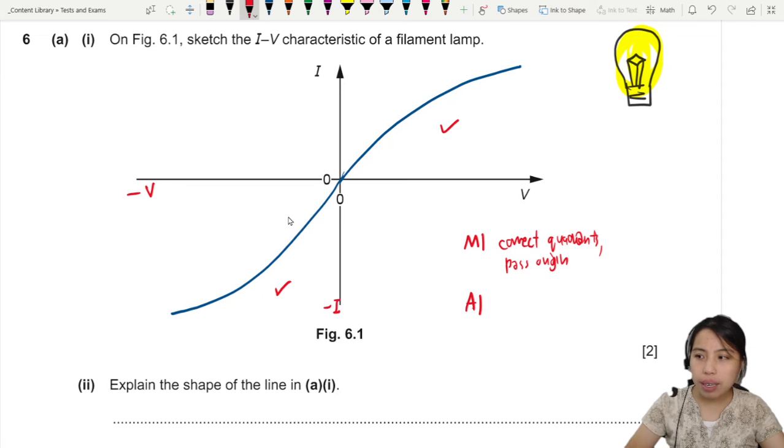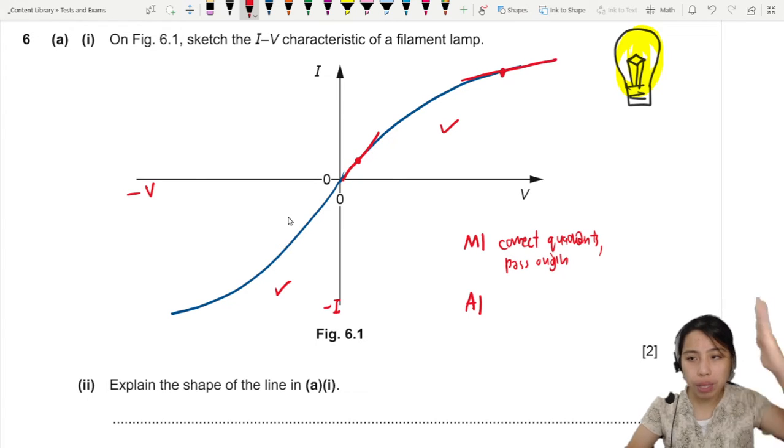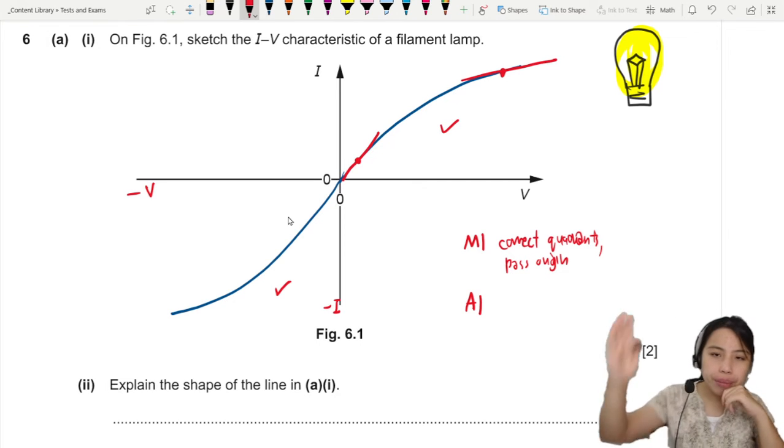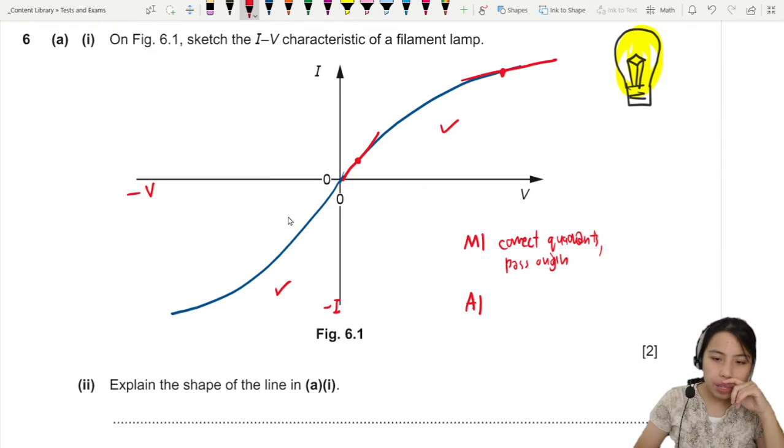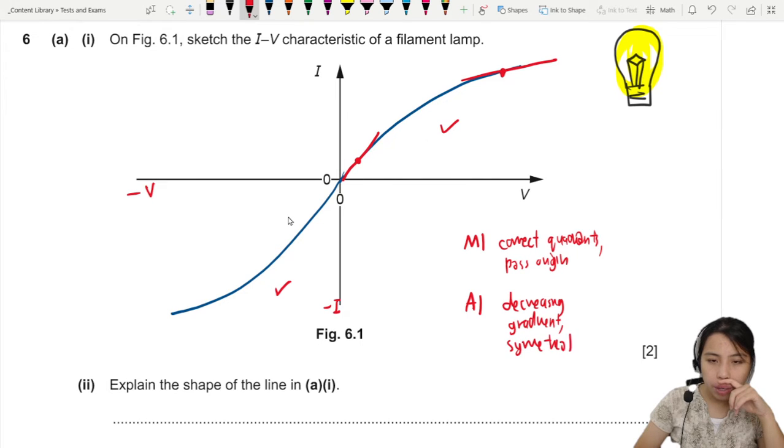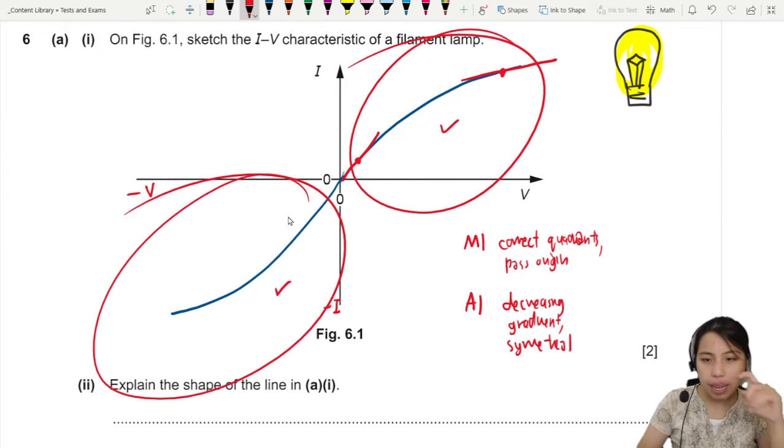Secondly, look out for the gradient. Should be the correct gradient. It should start off pretty steep. Then the gradient should eventually decrease. See the slope is getting more flat. So that's for decreasing gradient. And the graph must be symmetrical for the right side and the left side as well.